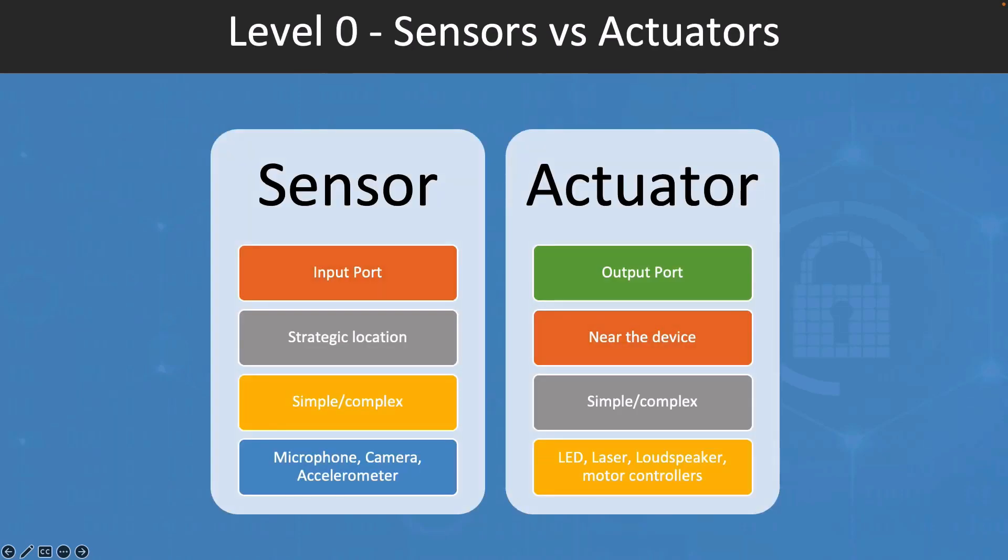Here is the main difference between the sensors and actuators. From the function perspective, a sensor is a device that detects and measures physical properties such as temperature, pressure, humidity, and converts them into electrical signals that can be processed by the control system. An actuator, on the other hand, is a device that receives electrical signals from the control systems and converts them into physical action, such as movement or adjustment of a valve or a motor. From the input-output perspective, a sensor is typically an input device since it provides information to the control system. An actuator, on the other hand, is typically an output device since it receives commands from the control system and performs physical actions.